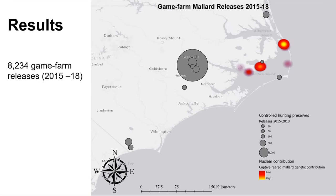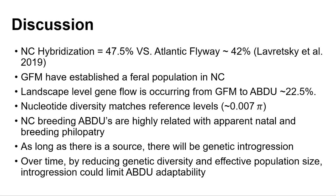We mapped regulated shooting areas releasing game farm mallards in coastal North Carolina relative to where we found genetic contributions from game farm mallards in our samples. While not conclusive, for at least one RSA there were game farm mallards being released in an area where we identified samples with those genetic contributions. Our hybridization level in North Carolina was around 47.5 percent compared to the rest of the flyway at about 42 percent — somewhat higher — and we do have game farm mallards established in a feral population in North Carolina from prolonged releases.